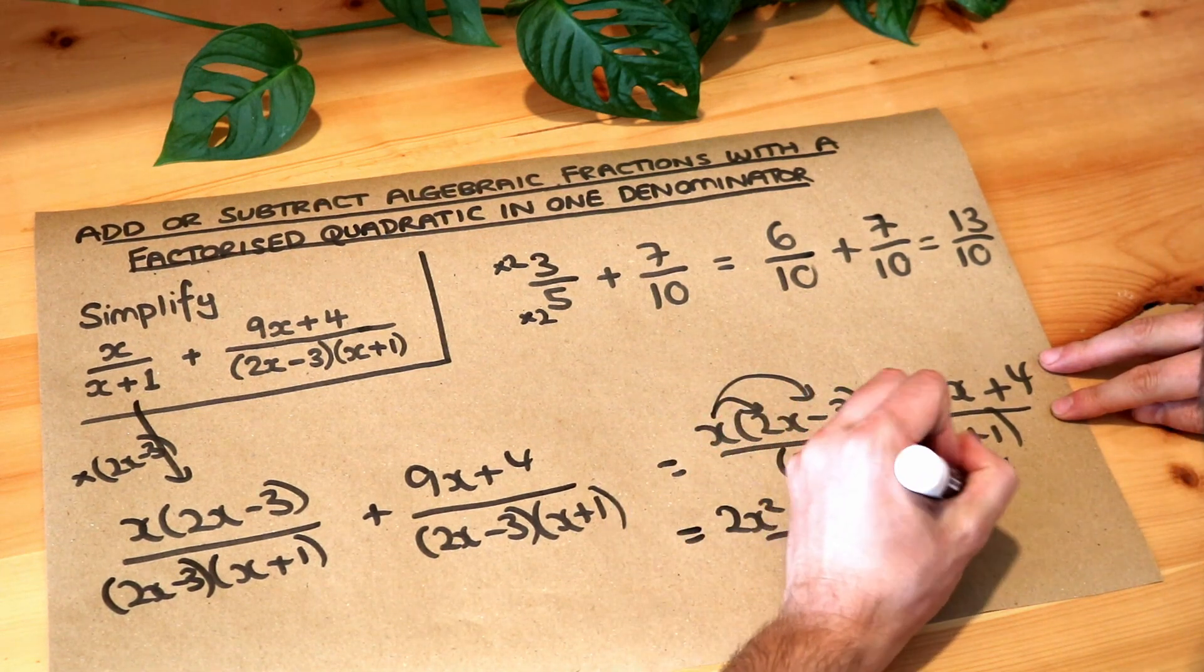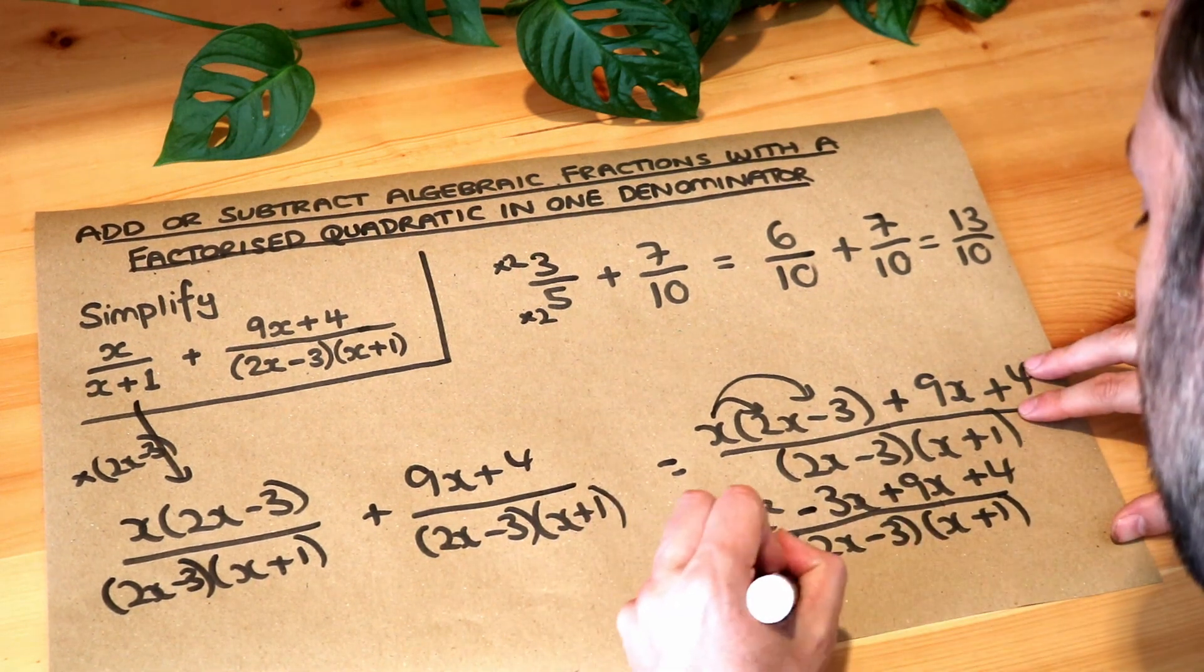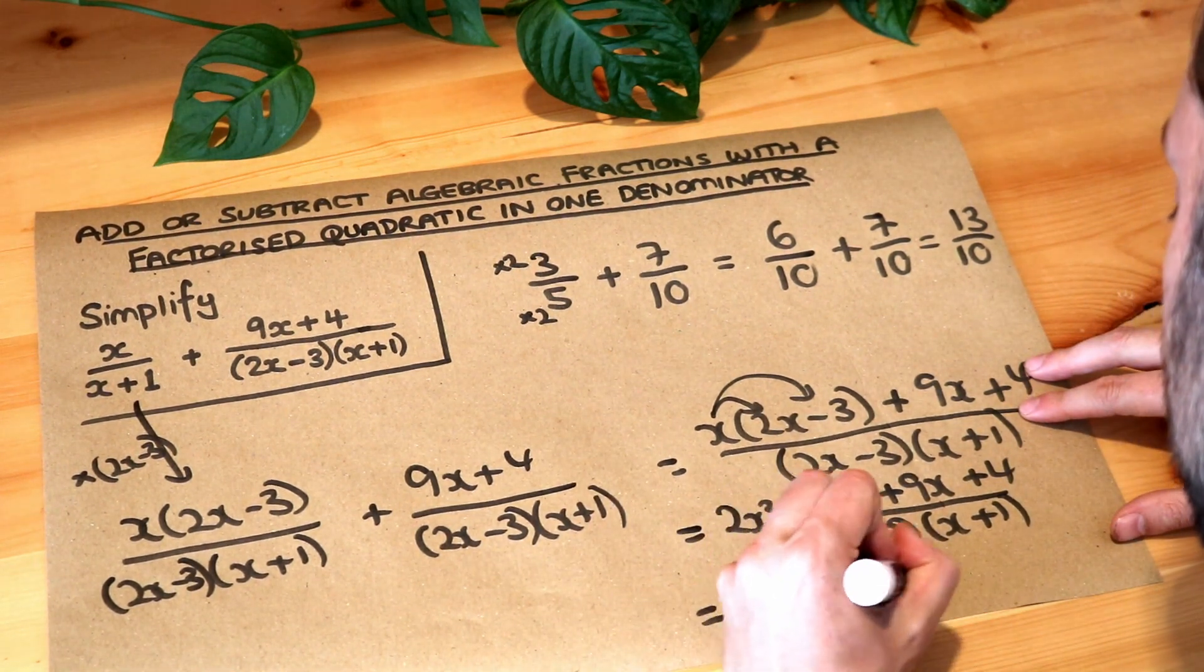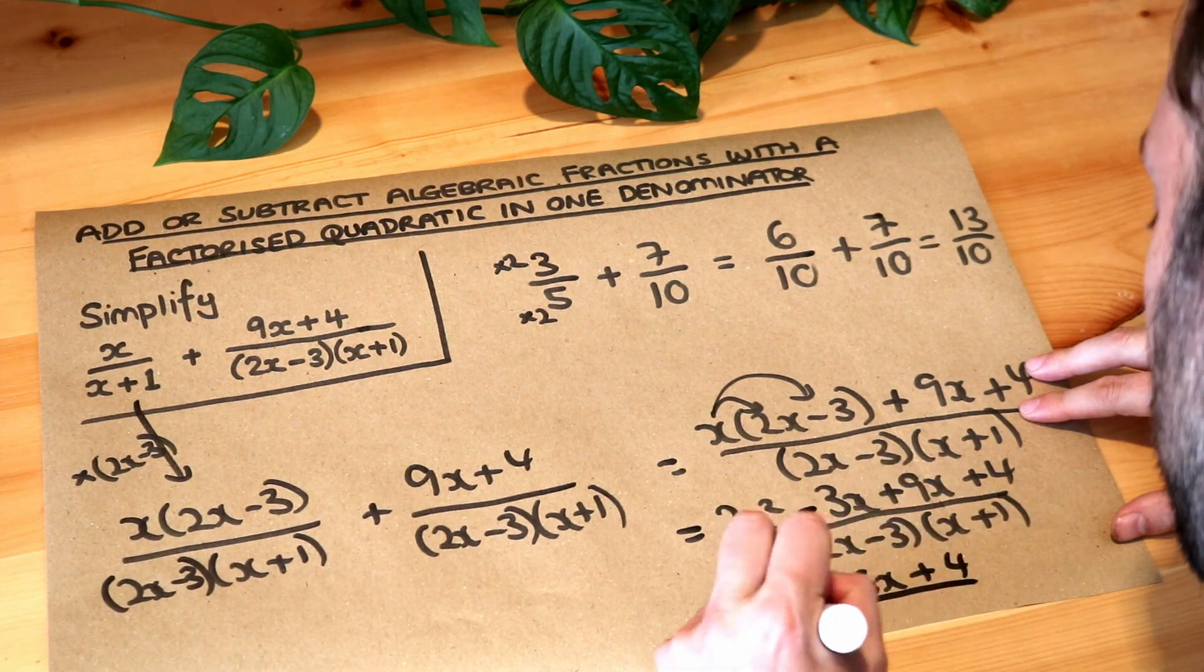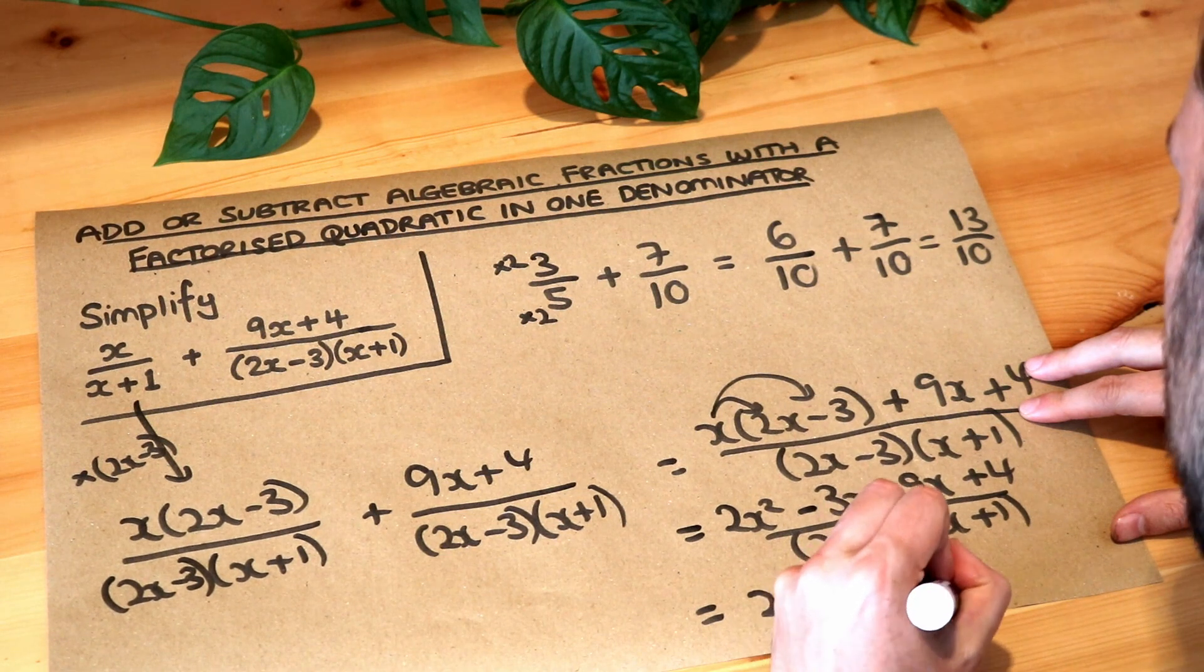I'm running out of space so if we collect like terms that's 2x squared plus 6x plus 4 all over 2x minus 3 x plus 1.